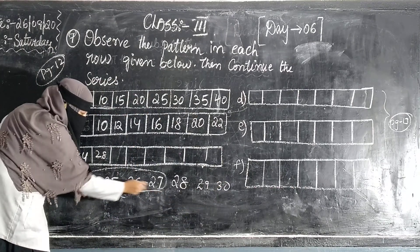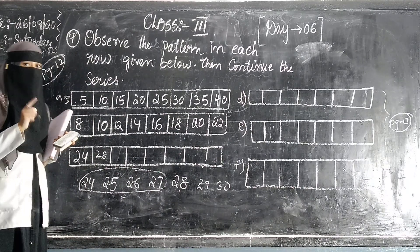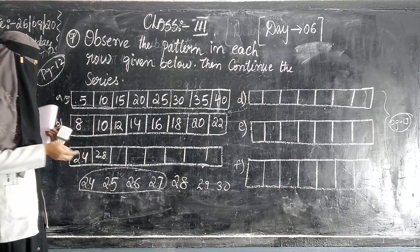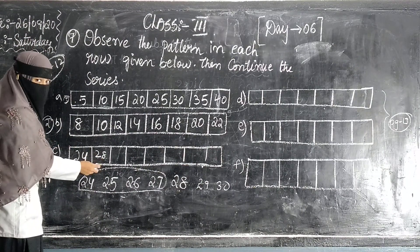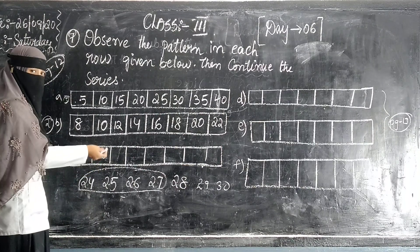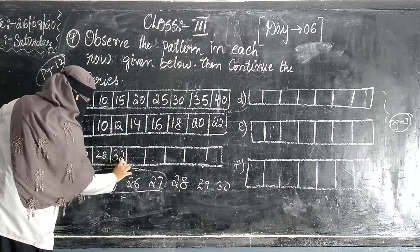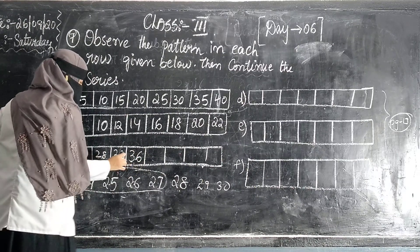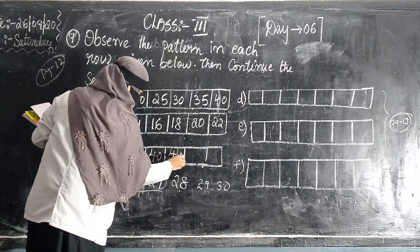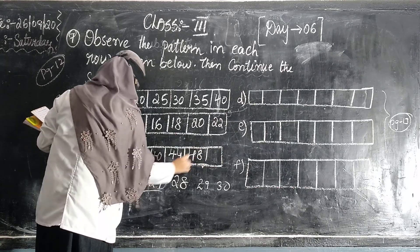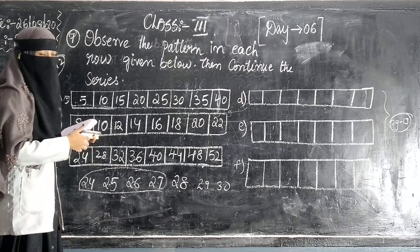4 numbers to skip. 4 times 1 is 4. 4 times 2 is 8. 4 times 3 is 12. 4 times 4 is 16. 4 times 5 is 20. 4 times 6 is 24. 4 times 7 is 28. 4 times 8 is 32. 4 times 9 is 36. 4 times 10 is 40. 4 times 11 is 44, 48. Next: 52.